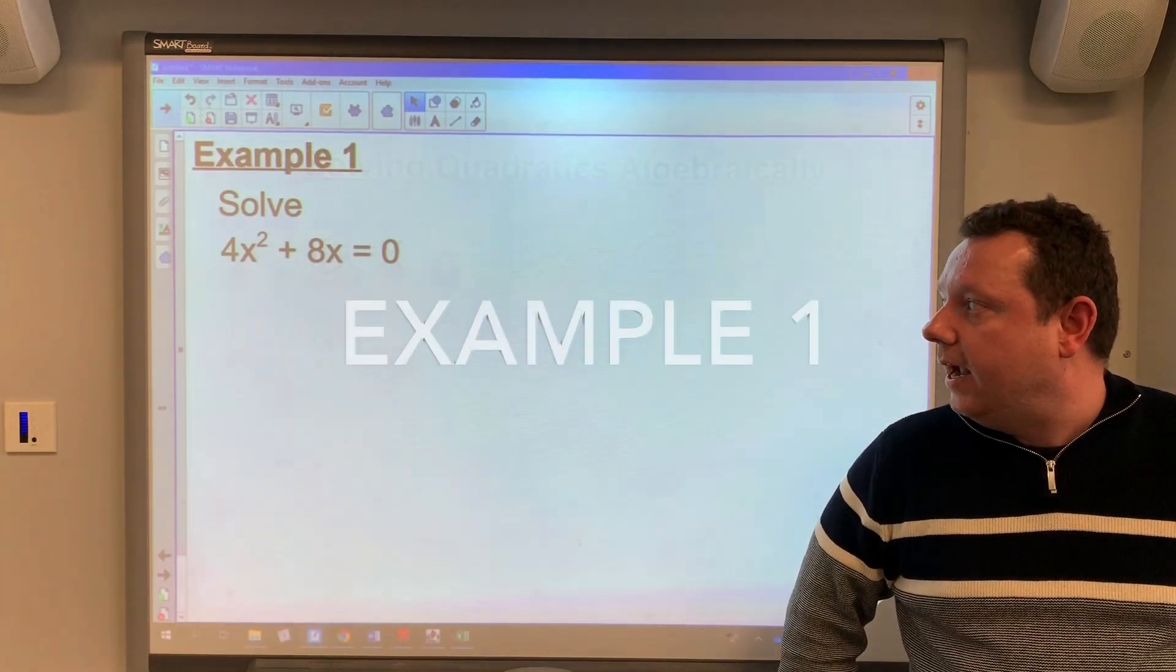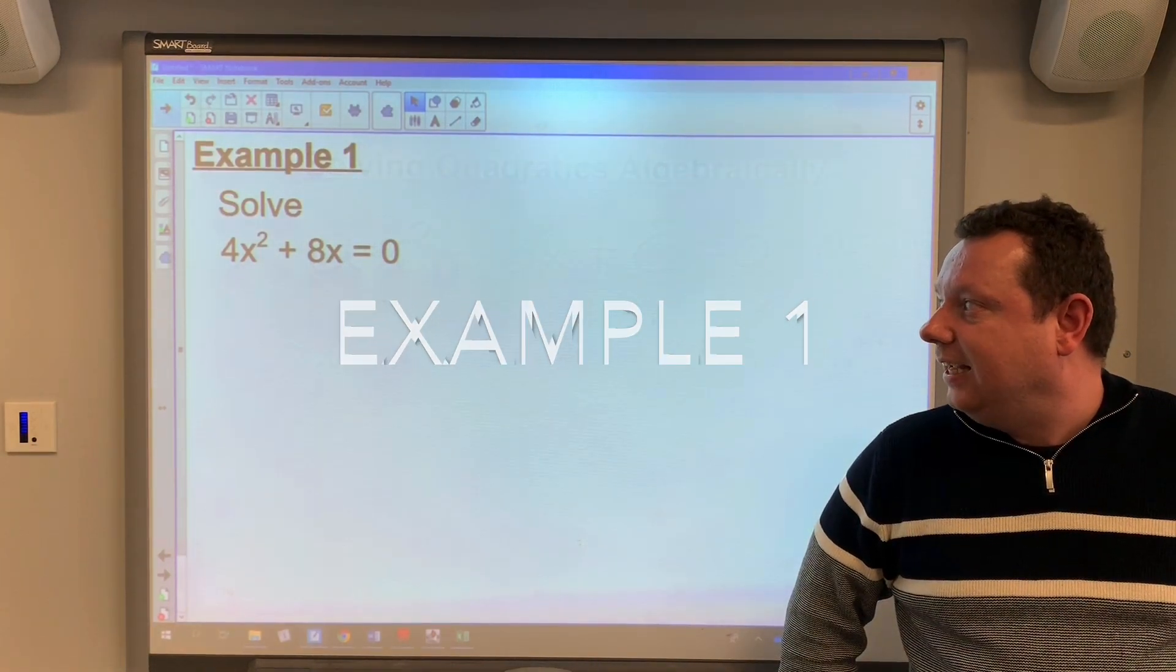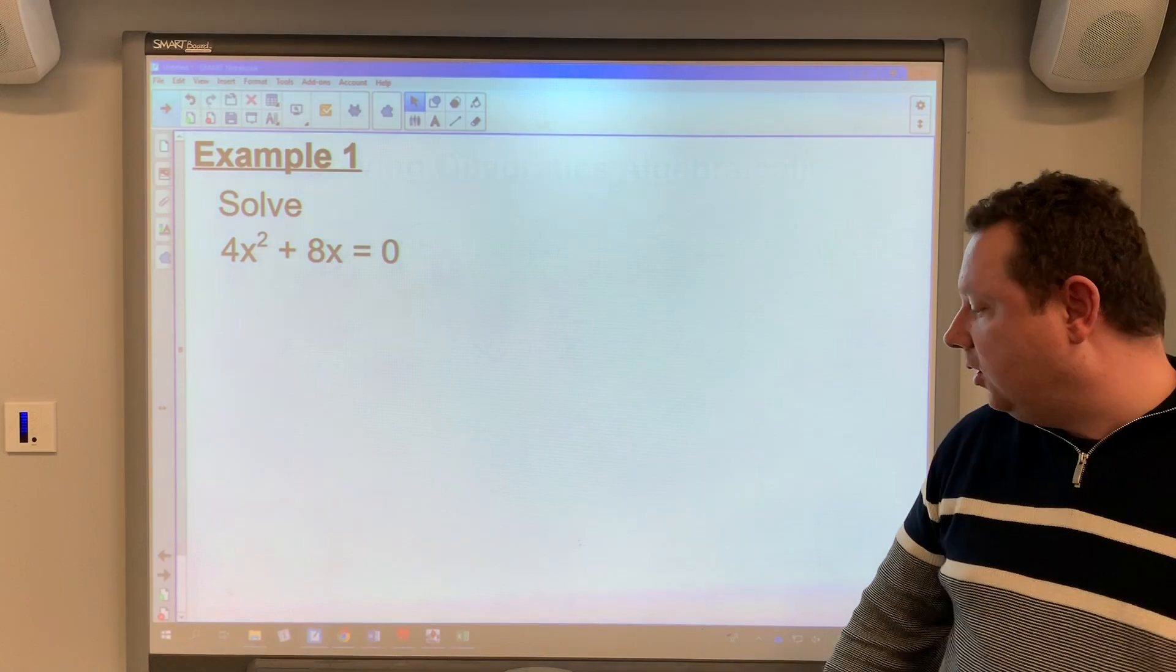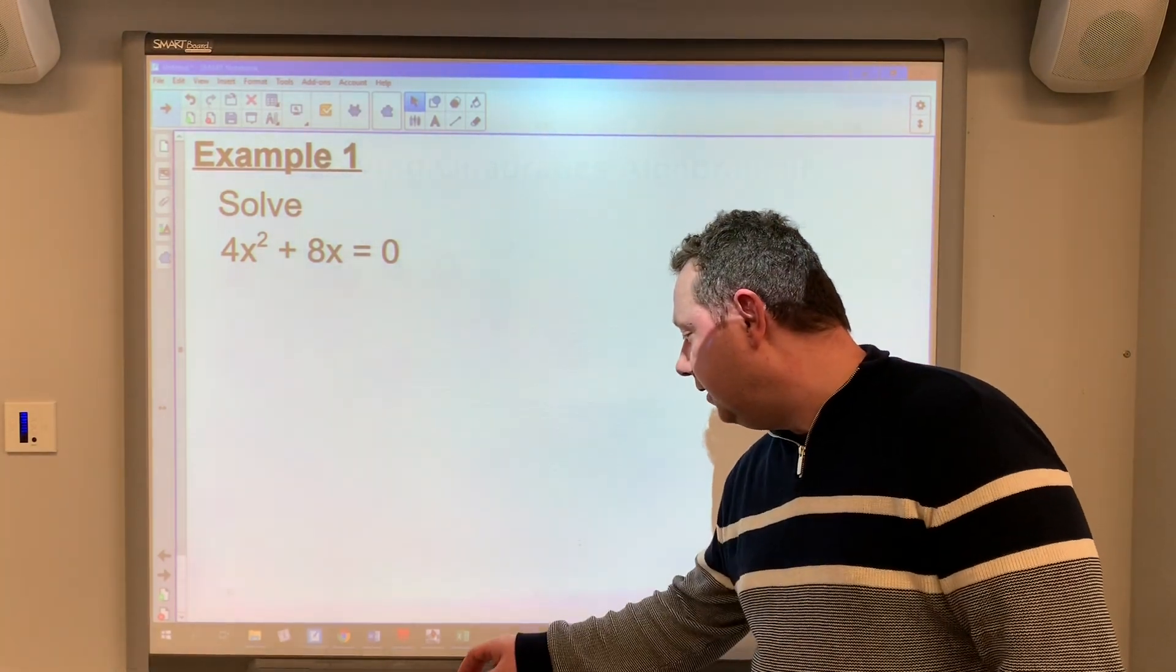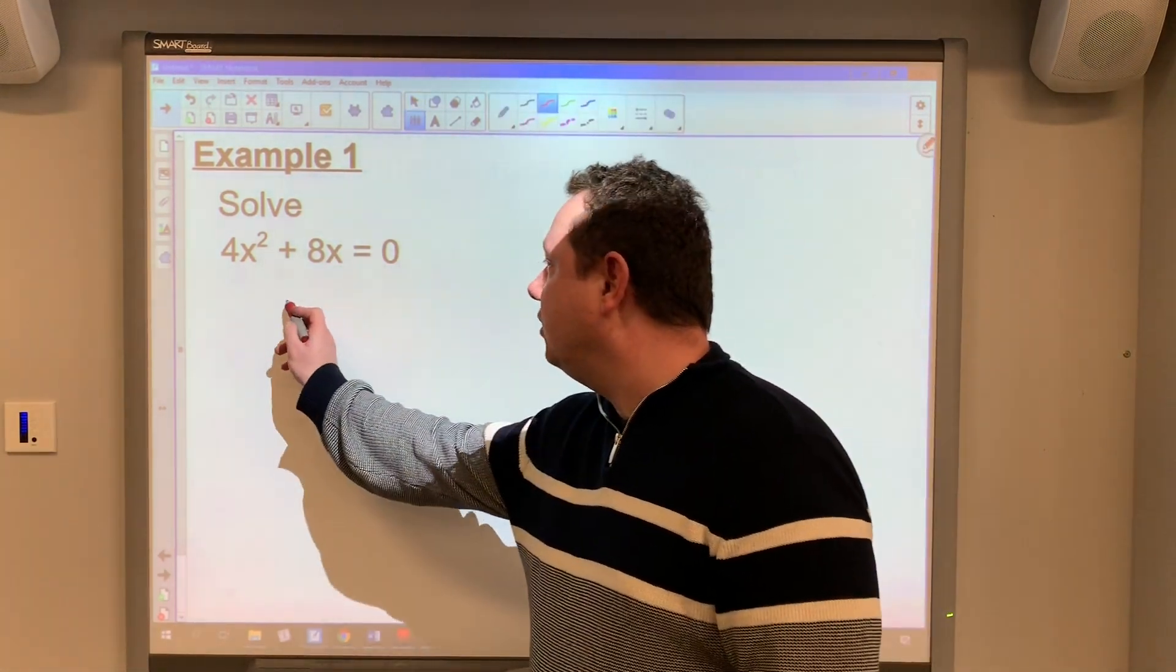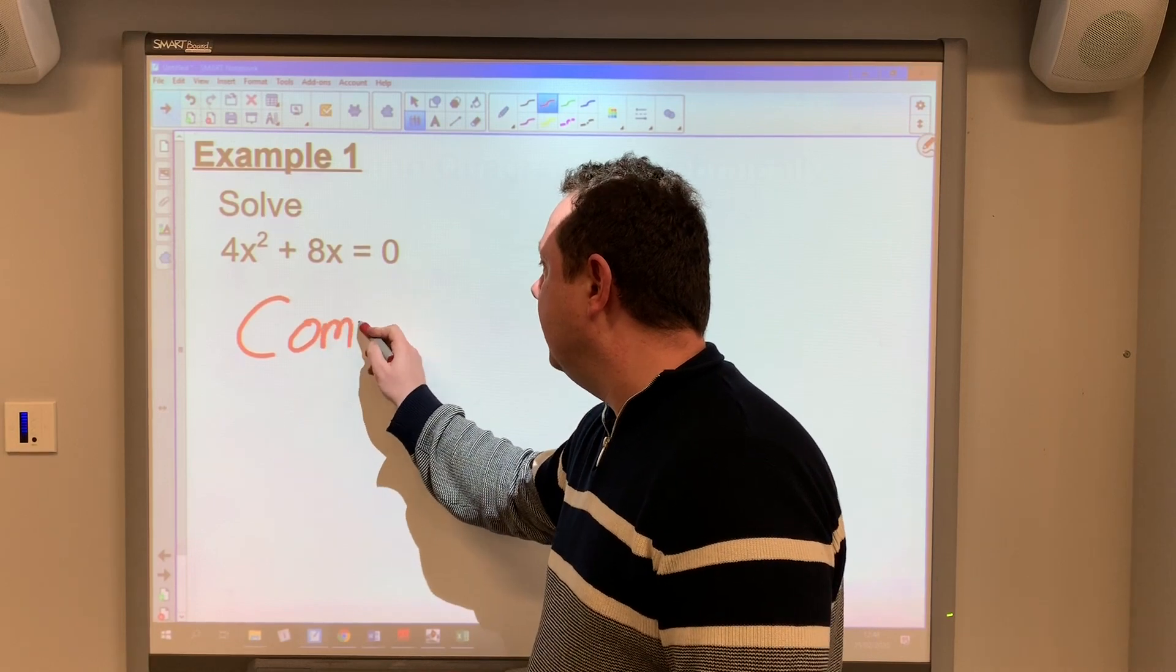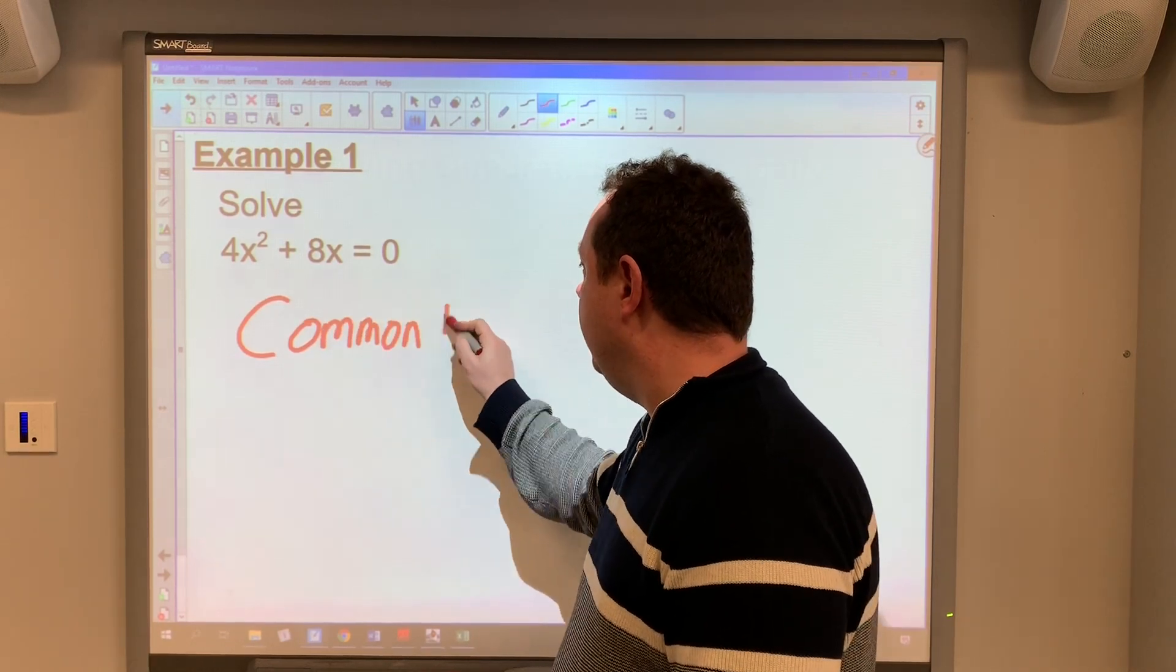Example one says solve 4x² + 8x = 0. So just a quick reminder of factorising. The first thing I checked was a common factor. So I'm going to write every single time common factor equals.